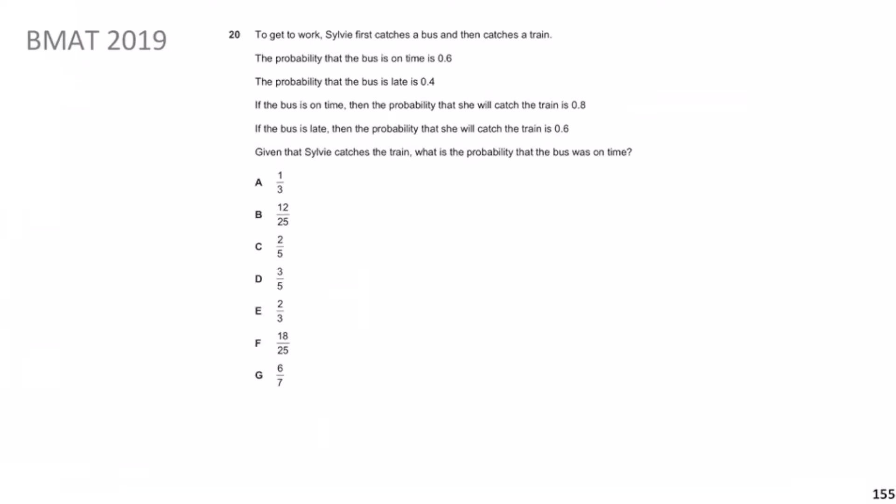This is a common question stem in BMAT Section 2 maths for probability. When the question is organised like this with two events — in this case catching the bus and then catching the train — this points towards something you've probably come across at GCSE, which is a tree diagram.